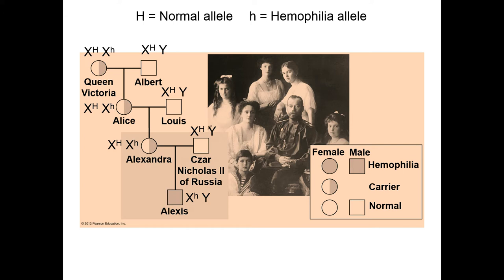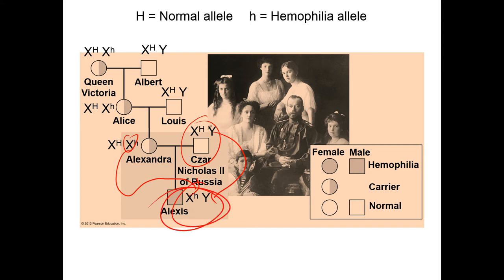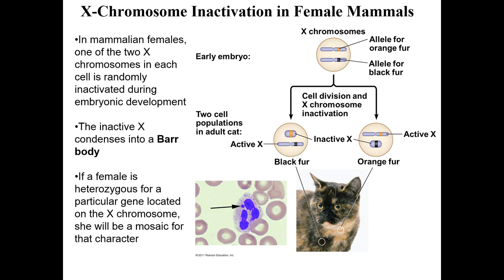Looking at a pedigree for hemophilia: Queen Victoria is a carrier for the hemophilia allele; Albert is normal. Neither parent suffers from hemophilia. Their daughter Alice is a carrier. Louis, who marries Alice, is normal. Their daughter Alexandra is a carrier for the hemophilia allele. Tsar Nicholas has a normal hemophilia allele. Alexis got his X chromosome from his mom and Y chromosome from his dad, and suffered from hemophilia.